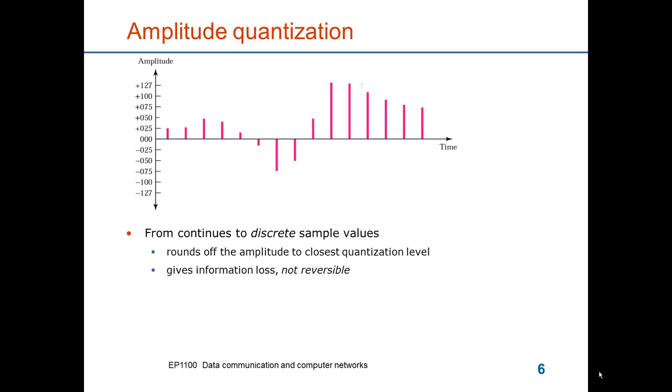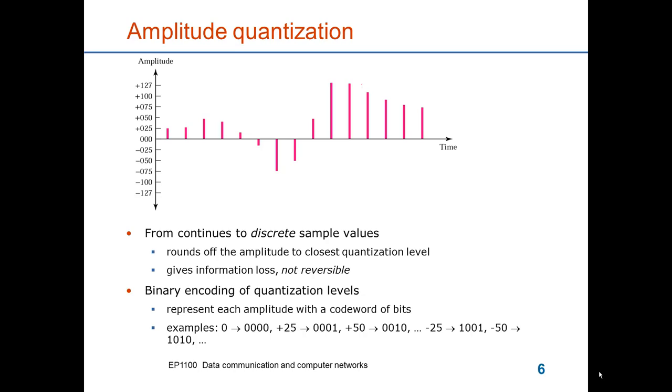For instance, if it's a voice signal that we quantize, the round off error should not be audible or at least not disturb the voice communication. Once we have quantized the signal to a set of finite amplitude levels, then we can represent each amplitude value by a codeword of bits. So for instance, we could take the zeroth level and represent it by four zeros. We could have a value which represents plus 25 millivolts, that could be represented by 0001. Plus 50 millivolts could be 0010, and minus 25 millivolts could be 1001.